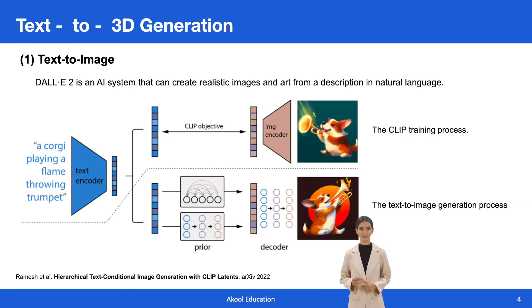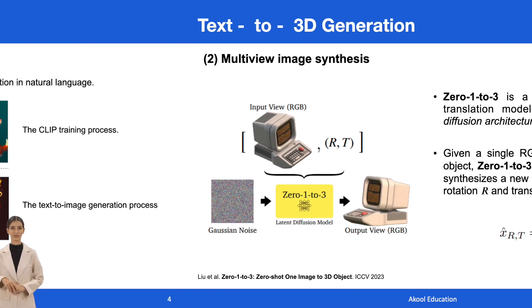This overview outlines the text-to-image framework employed by DALL-E 2. The CLIP training process is depicted above the dotted line, illustrating its acquisition of a unified representation space for both text and images. Below the dotted line lies the text-to-image generation process. To generate an image from a text description, a CLIP text embedding serves as input to either an autoregressive or diffusion prior, generating an image embedding. Subsequently, this embedding conditions a diffusion decoder, culminating in the production of the final image. It's noteworthy that the CLIP model remains frozen during the training of both the prior and the decoder.